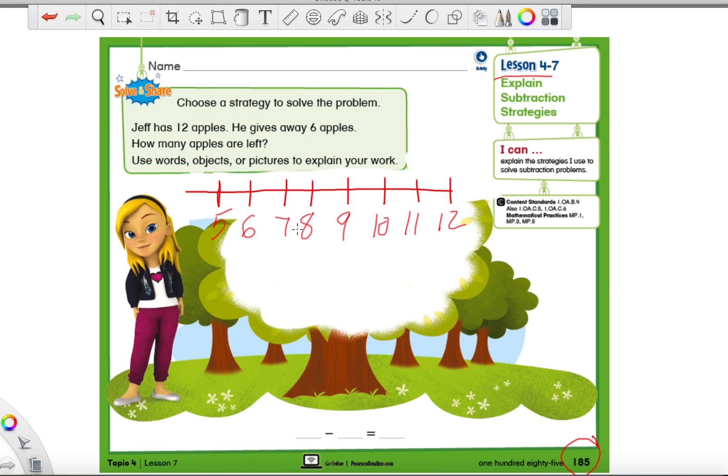Alright, so we're going to read this story problem, we're going to find out if we need to subtract or add, and we're going to pick out the special numbers and words. Jeff has 12 apples, so we circle that 12 because it is important. They don't tell us numbers just for fun, right? They always tell us numbers for a special reason. He gives away 6 apples, so we're going to circle that 6. And there's some very important words that we hear in this sentence: he gives away. So, gives away tells us that he's going to have a smaller number.